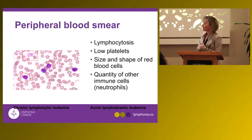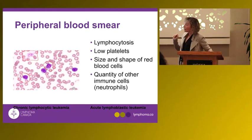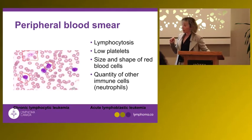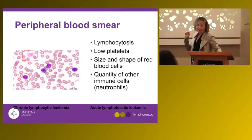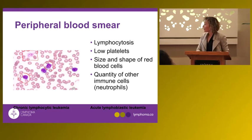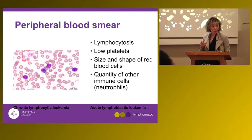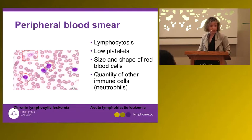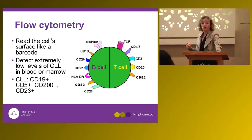A drop of blood is put on a glass slide and the hematologist looks at it under the microscope. In a typical CLL patient, we would see an increased number of mature lymphocytes, and sometimes smudge cells, which are an indication of the fragility of these cells when spread on the slide. We can also look at the size and shape of red cells and platelets.